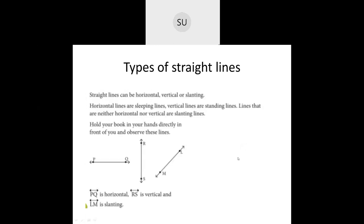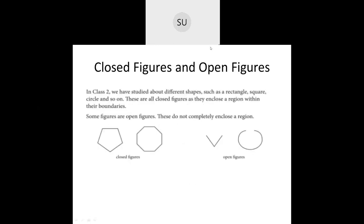Then we have different types of straight lines. Straight lines can either be horizontal, vertical, or slanting. Horizontal lines are sleeping lines and vertical lines are standing lines. Lines which are neither horizontal nor vertical are called slanting lines. So PQ is a horizontal line, RS is a vertical line, and LM is a slanting line.